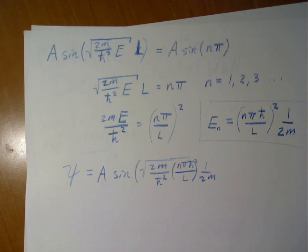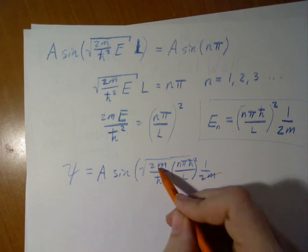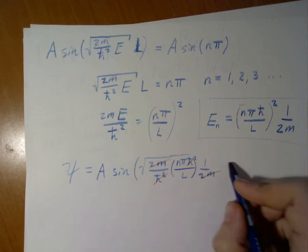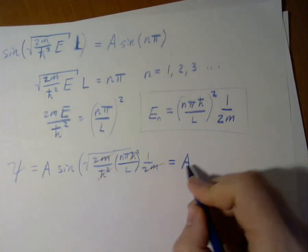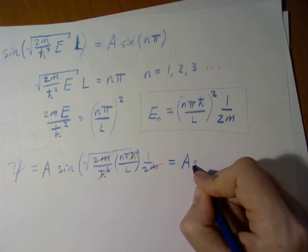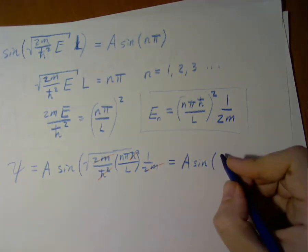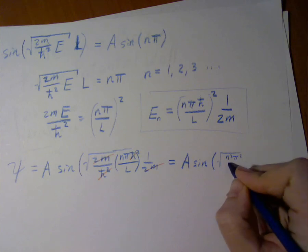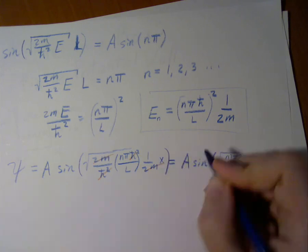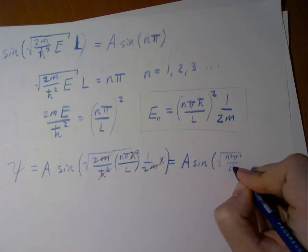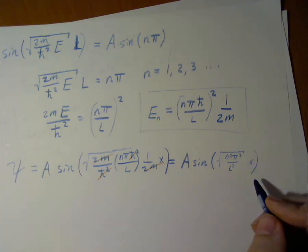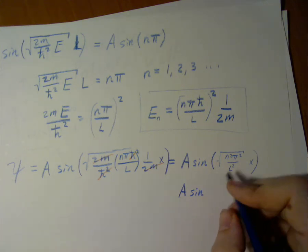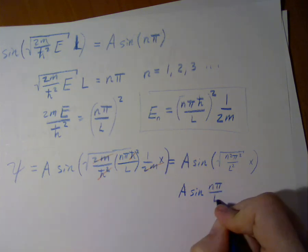From here, we can make certain simplifications that get us back to a simpler form. 2m will cancel out, h-bar will cancel out. We are left with A, which is our amplitude, which we'll solve for in a minute, sine of the square root of n squared pi squared over L squared times x. Once again, if we simplify, we get A sine of n pi over L times x.